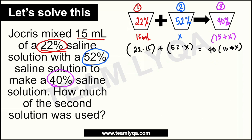So now we have 22 times 15. That would be 220 plus 110, so that will be 330. Plus 52x equals 40 times 15 — so 400 plus 200, that would be 600 — plus 40x. Bakit 40x? Kasi kailangan mo siyang i-distribute dun. That's yung distributive property — kapag meron kang i-multiply, i-distribute mo siya sa kanilang dalawa. If you haven't seen that video yet, ili-link ko na lang dito sa taas. Very important yun.